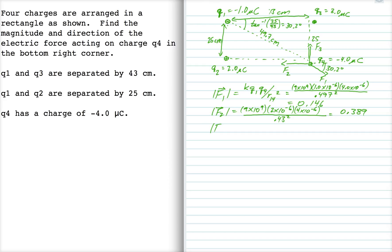And finally, F3 is K times Q3 times Q4 over that distance squared, which is 25 centimeters. So that works out to be 1.728.